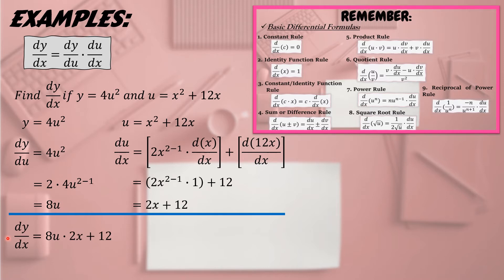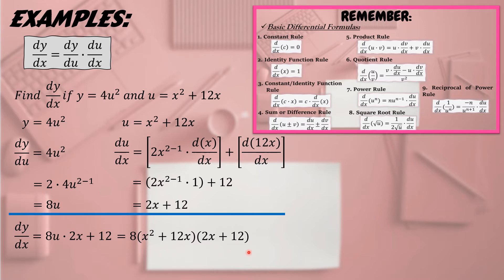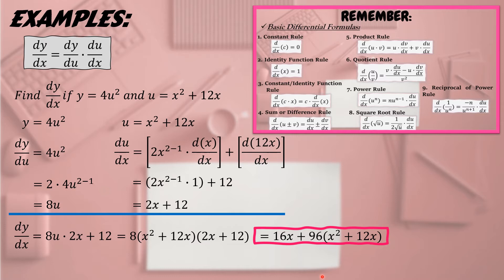Now, multiply 8u and 2x + 12. But we cannot multiply u and x directly, so let us substitute the value of u. Since u = x² + 12x, isubstitute natin: 8(x² + 12x)(2x + 12). Applying the distributive property, multiplying 8 by (2x + 12): the final answer is (16x + 96)(x² + 12x).